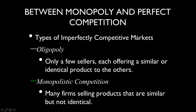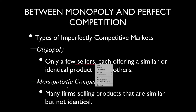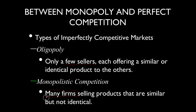There are two different types of imperfect competition. There's oligopoly, which falls closer to monopoly, where you have only a few sellers selling similar products, and monopolistic competition, where you have many sellers. Monopolistic competition really falls much, much closer to perfect competition.